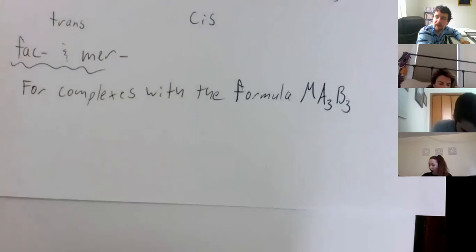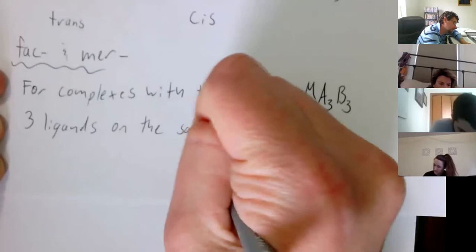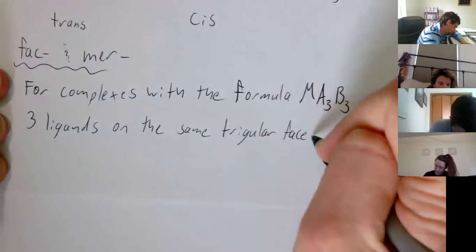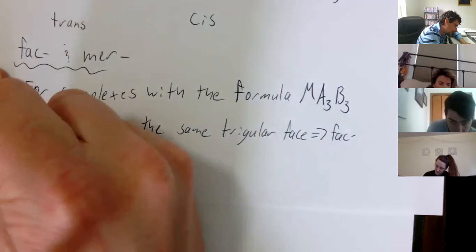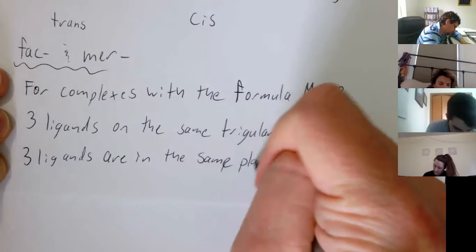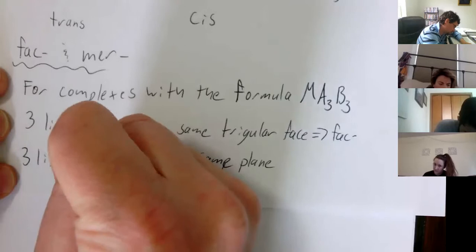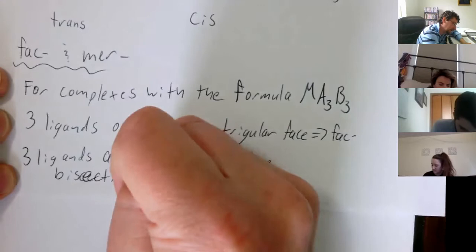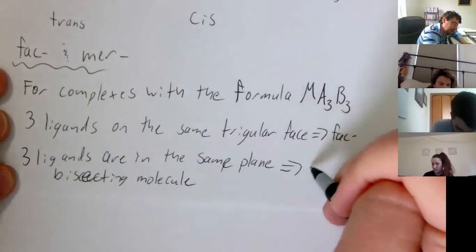In the facial (fac) isomer, the three like ligands are on the same triangular face of the octahedron. In the meridional (mer) isomer, the three like ligands are in the same plane that bisects the molecule or complex.